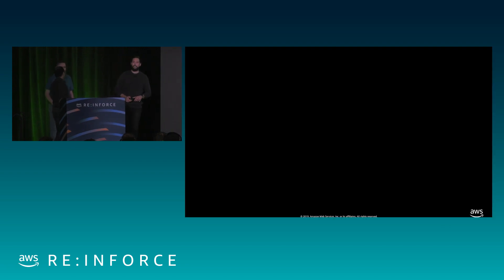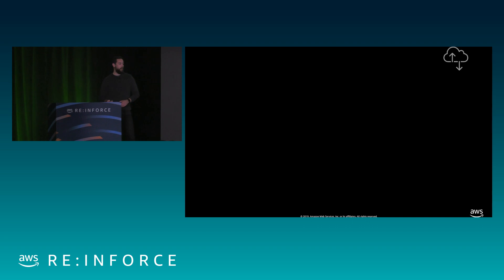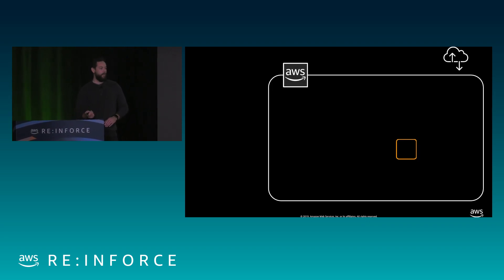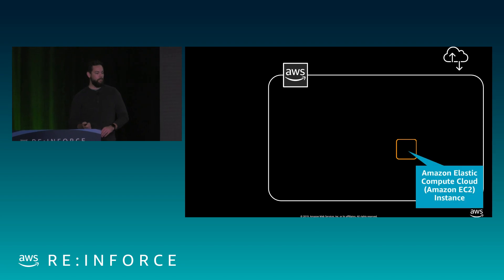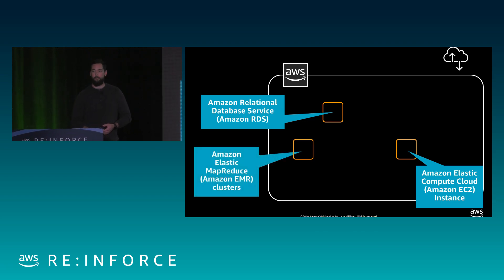Before we get into the visibility piece, I just want to set the scene. Networking is really the foundation of any deployment that you build in AWS. So if we've got an Amazon region, we've got some Elastic Compute, some RDS or relational database service, Elastic MapReduce or EMR, maybe an instance that could be running anything — this is all within your AWS account.